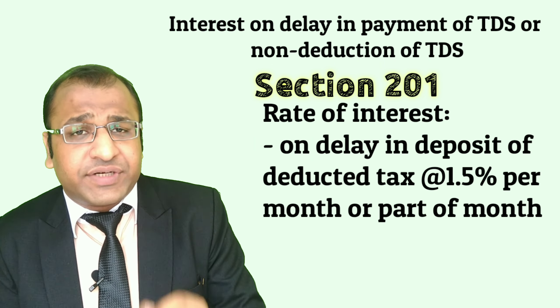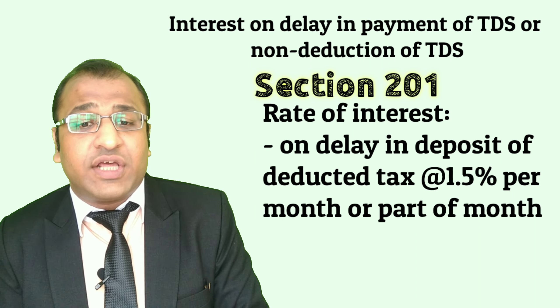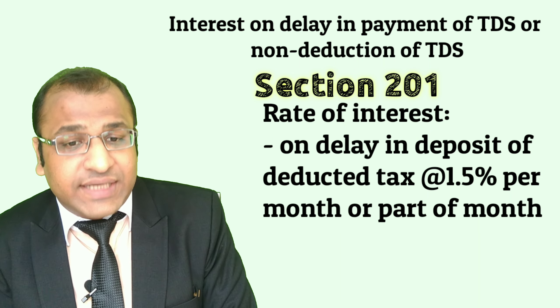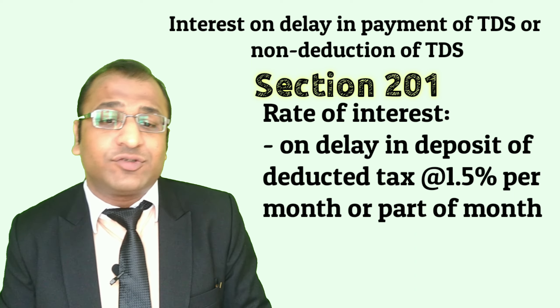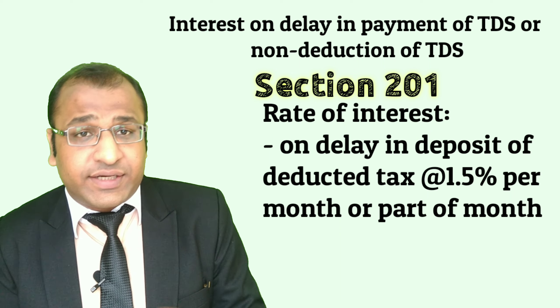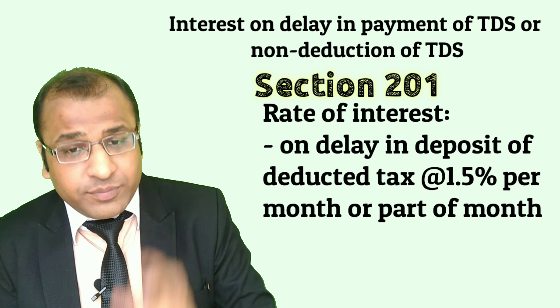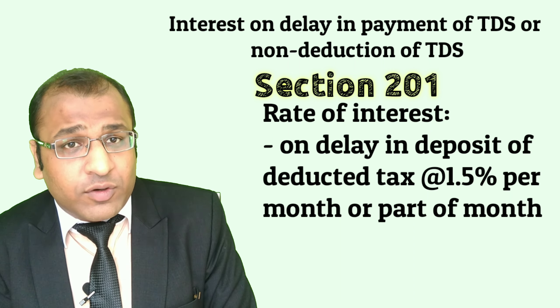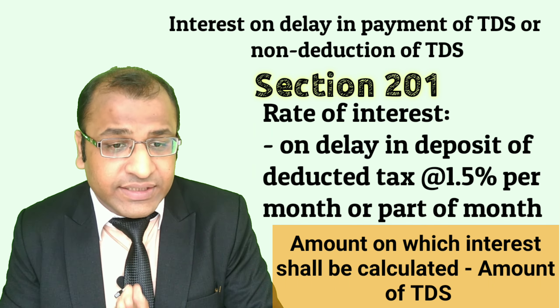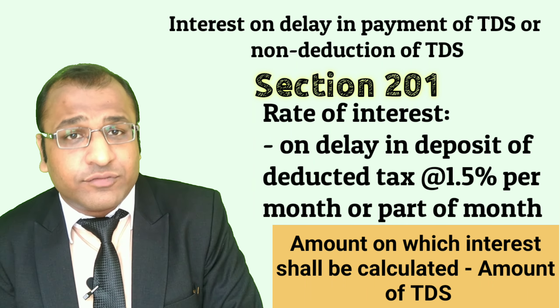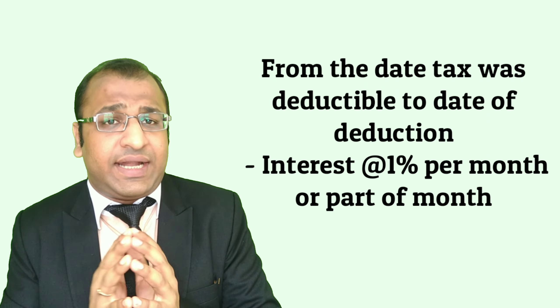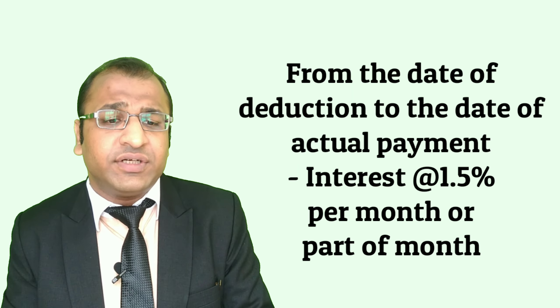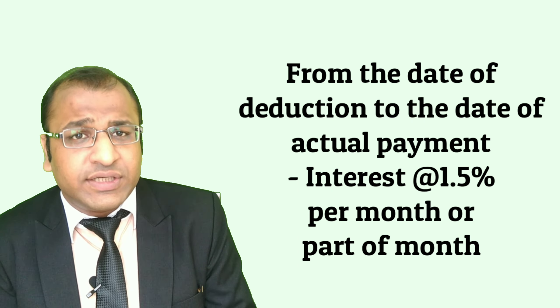Apart from this, interest at the rate of 1.5% shall also be levied for every month or part of the month on the amount of such tax from the date on which the tax was deducted to the date on which such tax was paid to the credit of the government. In other words, interest is levied in two parts: 1% for the delay in deduction, calculated up to the date of deduction, and then 1.5% for delay in payment after deduction, calculated from the date of deduction to the date of actual payment.